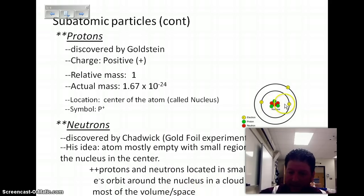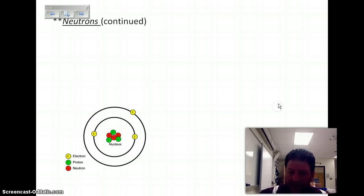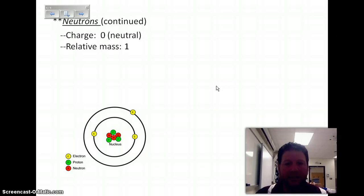So, up here where the mouse is, that right there is our nucleus. The charge of a neutron is zero. It is neutral. It has no charge. And the relative mass is one.